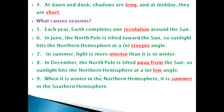In December, the north pole is tilted away from the Sun, so sunlight hits the northern hemisphere at a low angle. The answers for these two blanks are: the first one is 'away from' and the second one is 'low'.